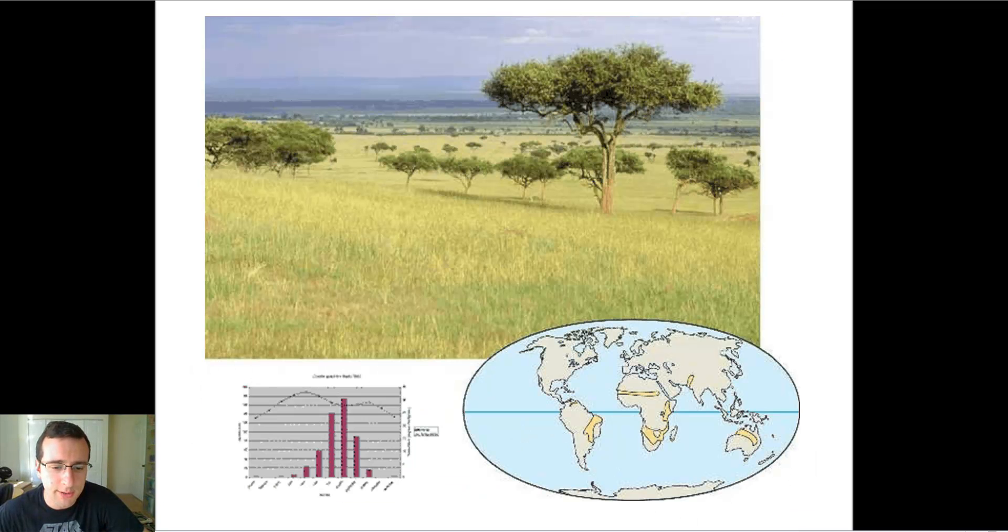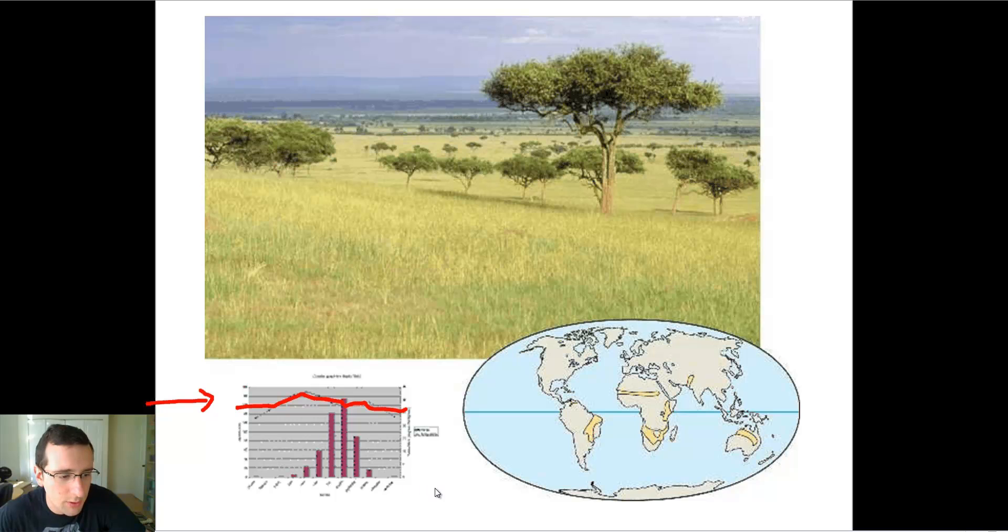But what about in between the rainforest and that? You're going to have the savanna. Beautiful, luscious ecosystem, absolutely amazing, one of the most wonderful places on Earth. Awesome animals live in this area. The savannas are spread throughout the tropical areas as well. As before, the temperatures are pretty much constant throughout the year, so hot environment. But notice that the water is not constant and it's also not too dry.